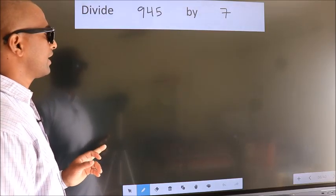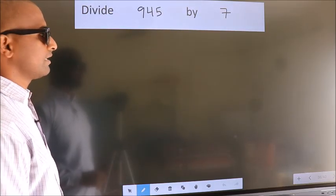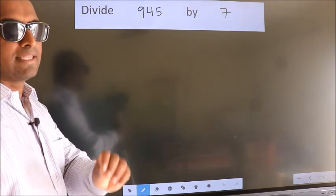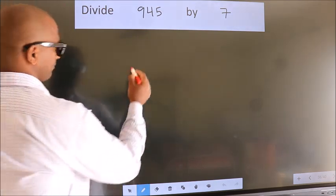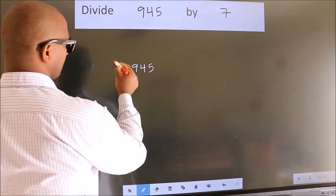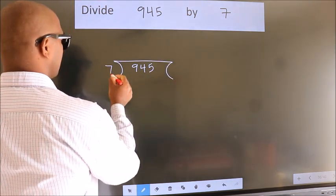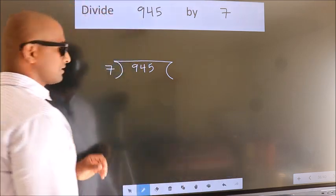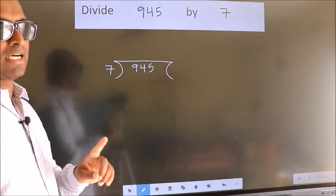Divide 945 by 7. To do this division, we should frame it in this way: 945 here, 7 here. This is your step 1.